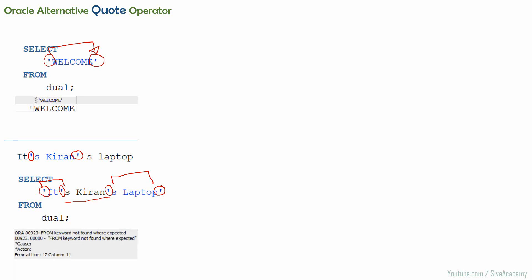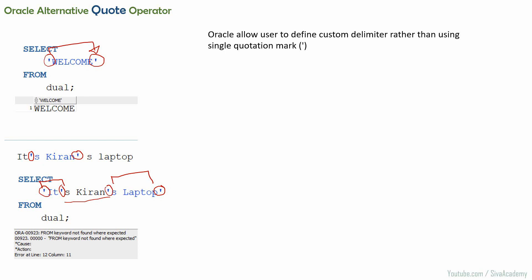To handle such scenarios, Oracle has actually provided us the ability to create our own custom delimiter. So instead of using the single quote as the delimiter, we can define our own custom delimiter. That's what we are going to see in this video.